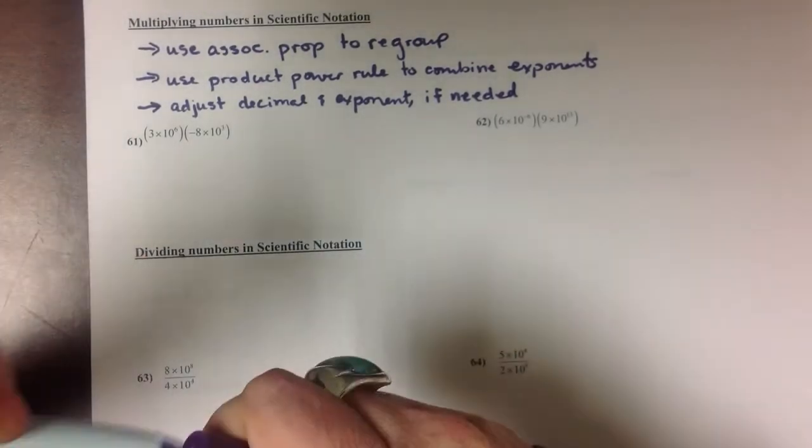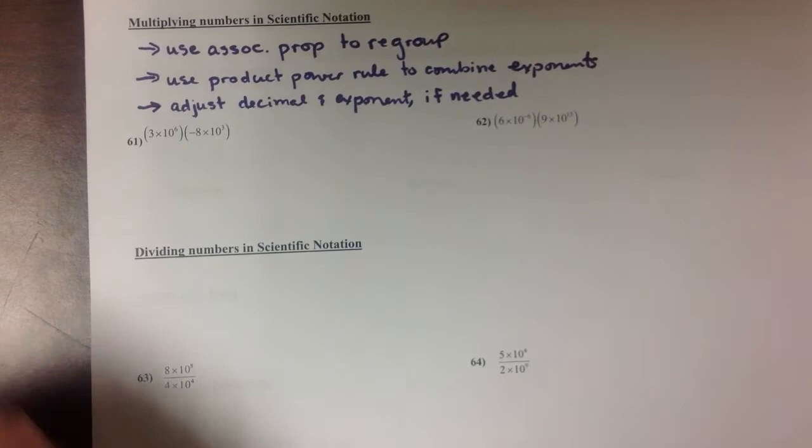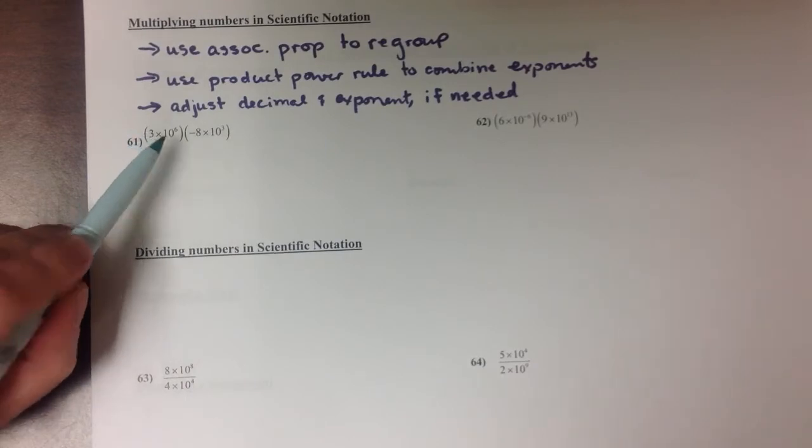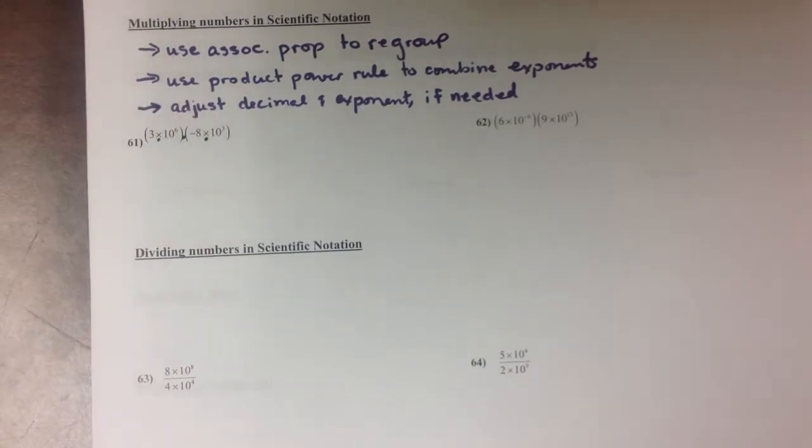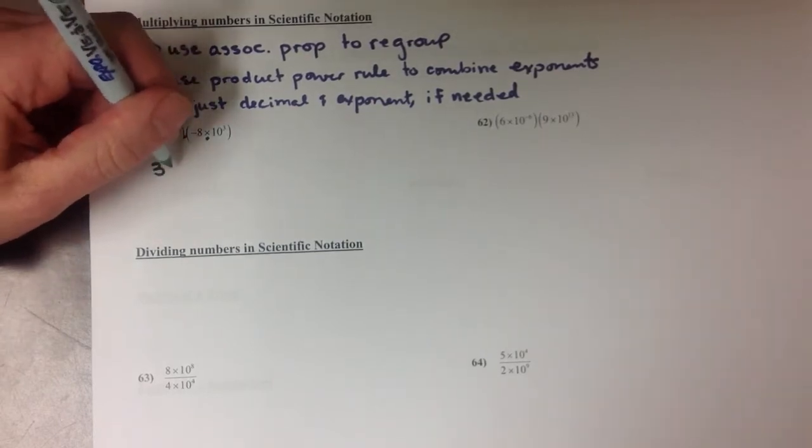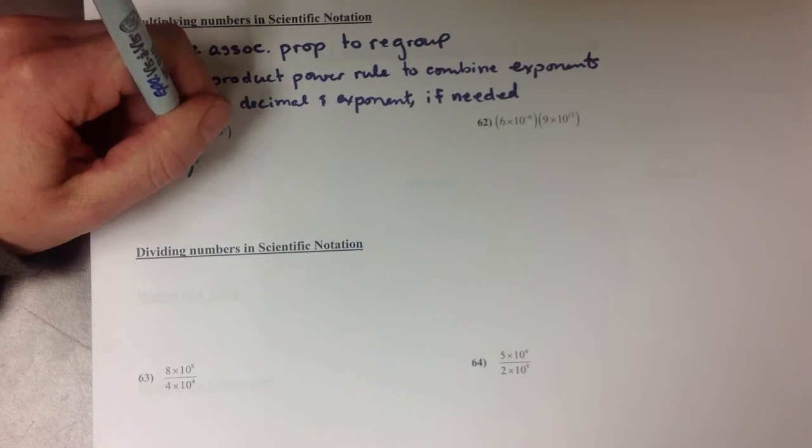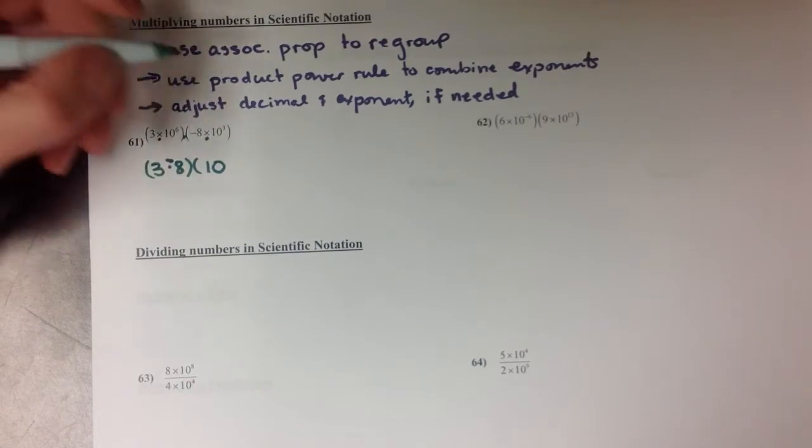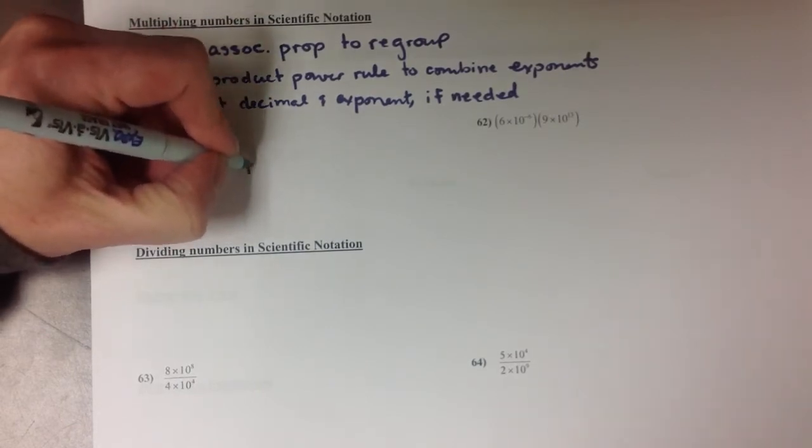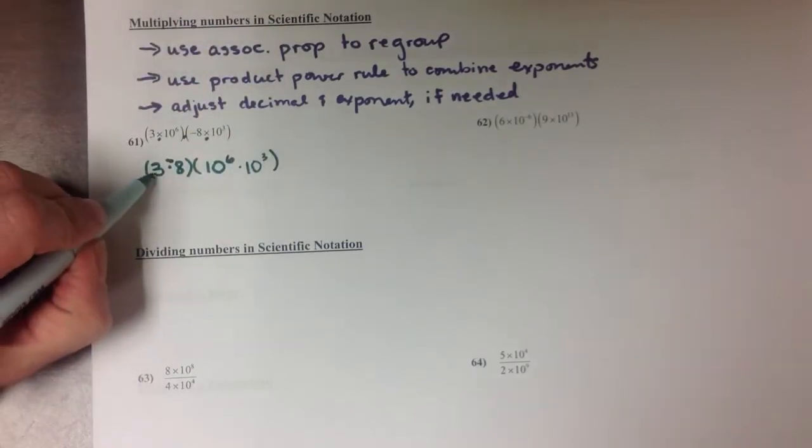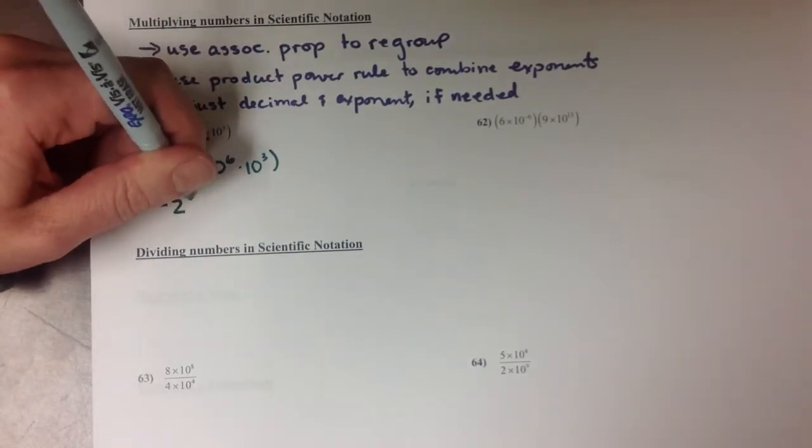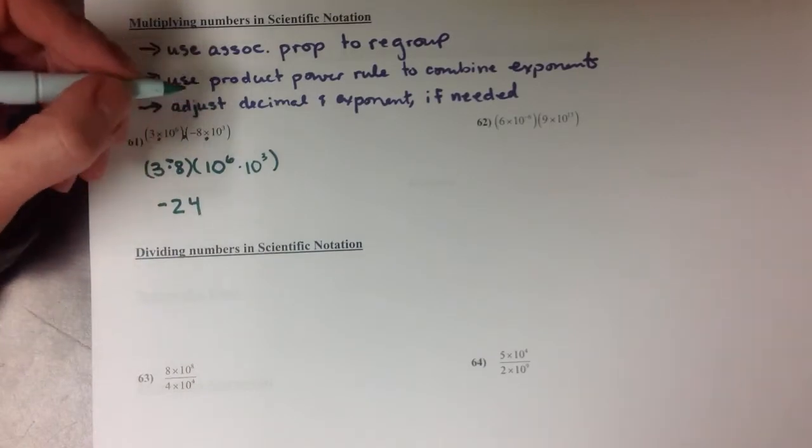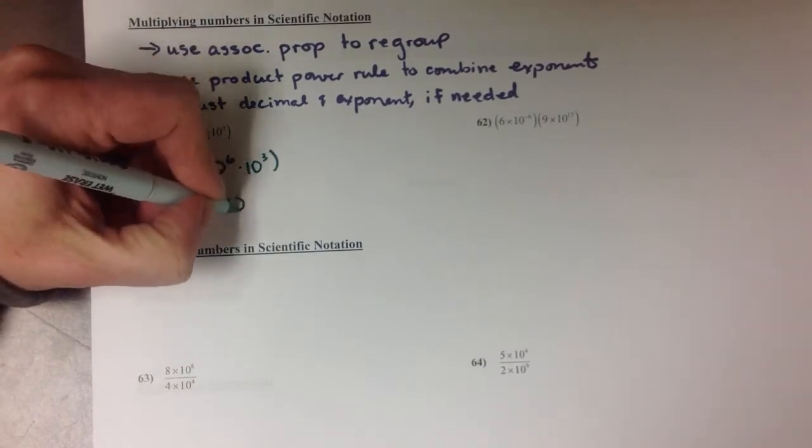So let's look at some examples of that. When we're asked to multiply 3 times 10 to the sixth times negative 8 times 10 to the third, since all three of the operations happening here are multiplication, we can regroup this into 3 times negative 8 times 10 to the sixth times 10 to the third. 3 times negative 8 is going to be negative 24. And 10 to the sixth times 10 to the third, the product power rule says we can add those exponents together. So we get times 10 to the ninth.